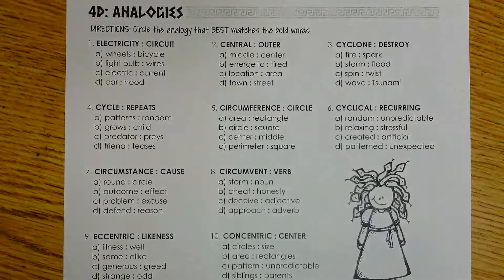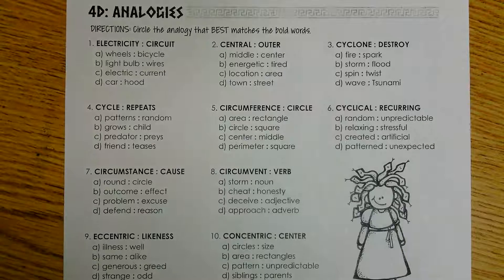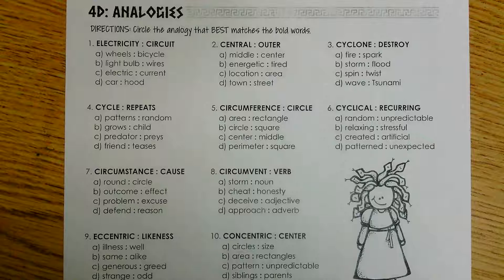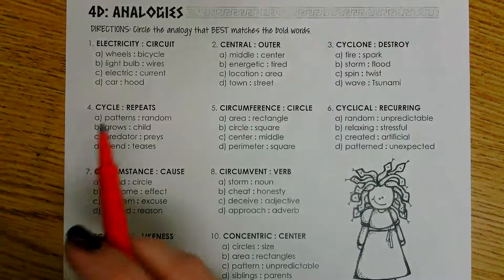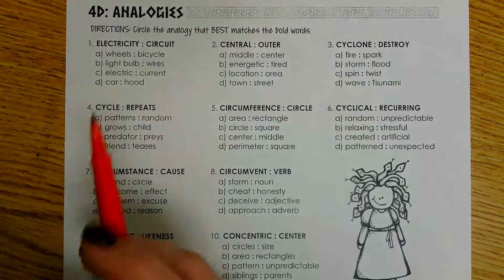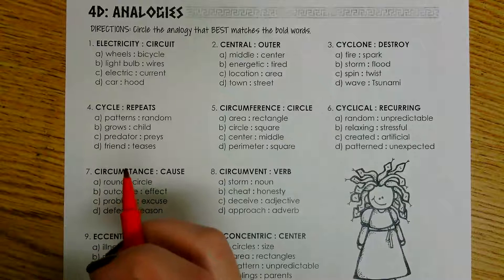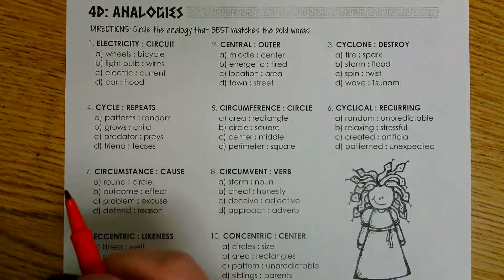Hey guys, this is Ms. Smith. I'm going to be doing practice D with you for your word study. With practice D we are looking at analogies. Your directions say circle the analogy that best matches the bold words. Remember, with an analogy we need to look at the pair we're given to start with, figure out what kind of connection they have, and then figure out which answer choice has that same connection.